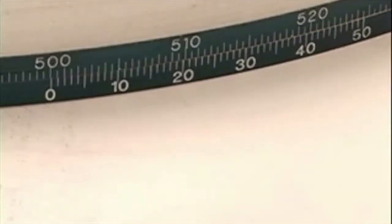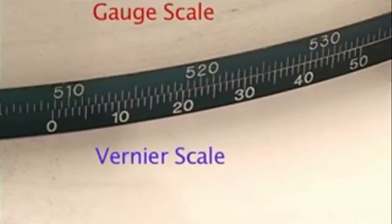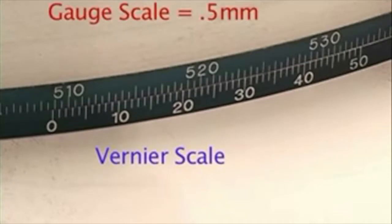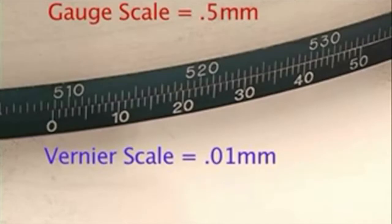The vernier scale should be positioned just below the gauge scale. Each line on the gauge member represents 0.5 mm, while each line on the vernier scale represents 0.01 mm.